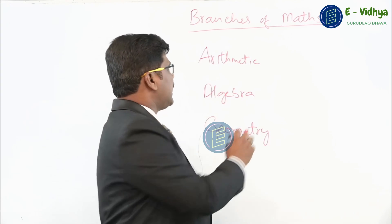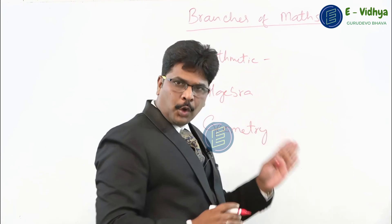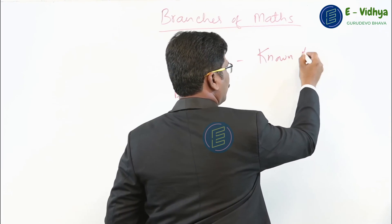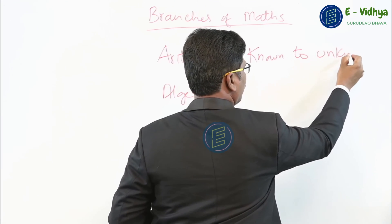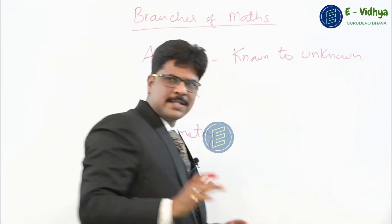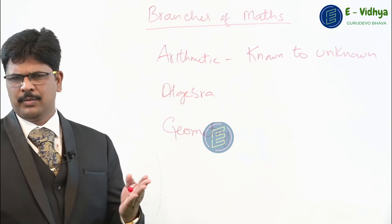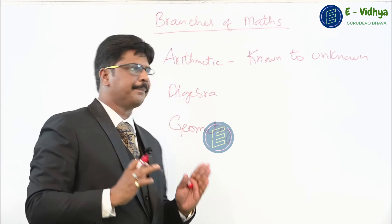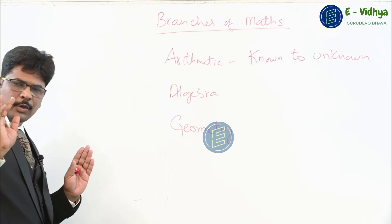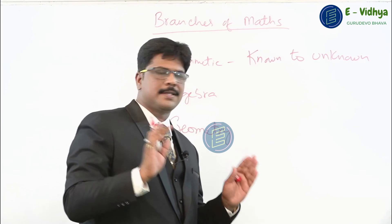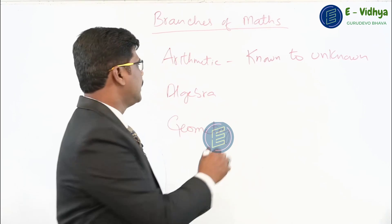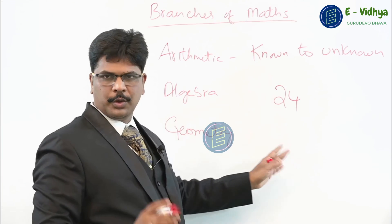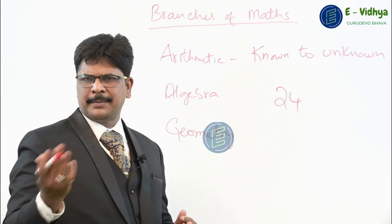Arithmetic is called 'known to unknown.' Now what is this known to unknown? Math talks all about numbers. When I say known to unknown, we will take a number — you know what this number is, right? It's known.